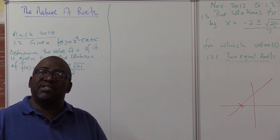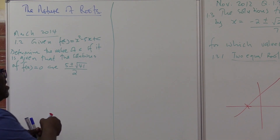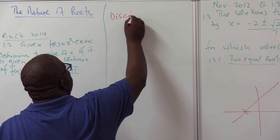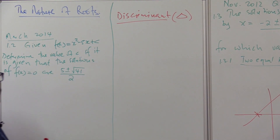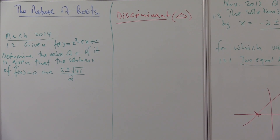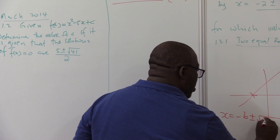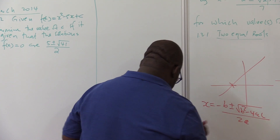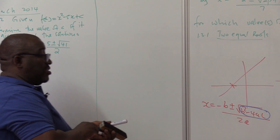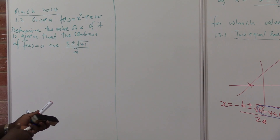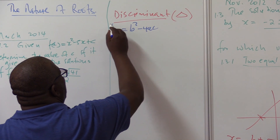We don't have to divorce mathematics from real life. There's something that we use to determine the nature of roots — we use what we call the discriminant. Either they use this symbol for the discriminant, delta. The discriminant comes from the quadratic formula: x is equal to minus b plus or minus square root of b squared minus 4ac all over 2a. The discriminant is what is found under the square root sign, and it is b squared minus 4ac.